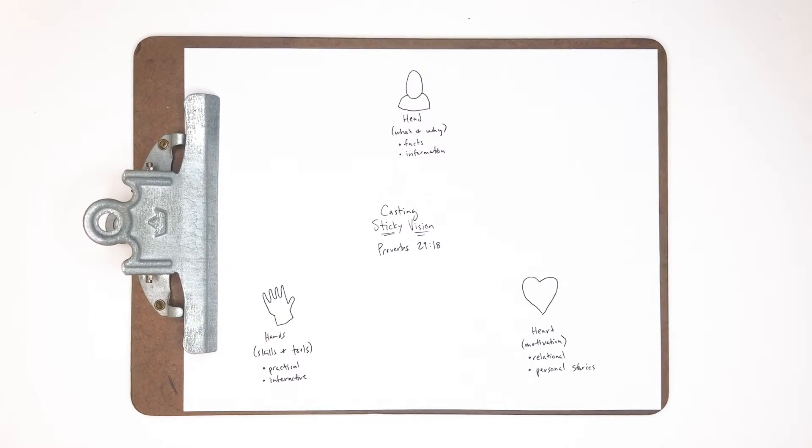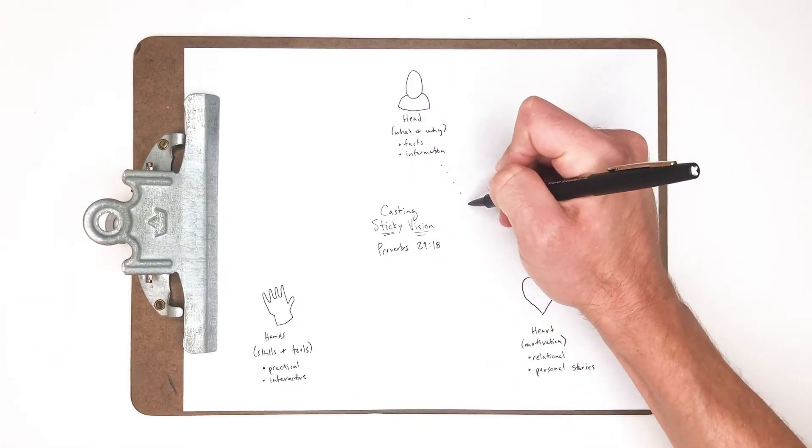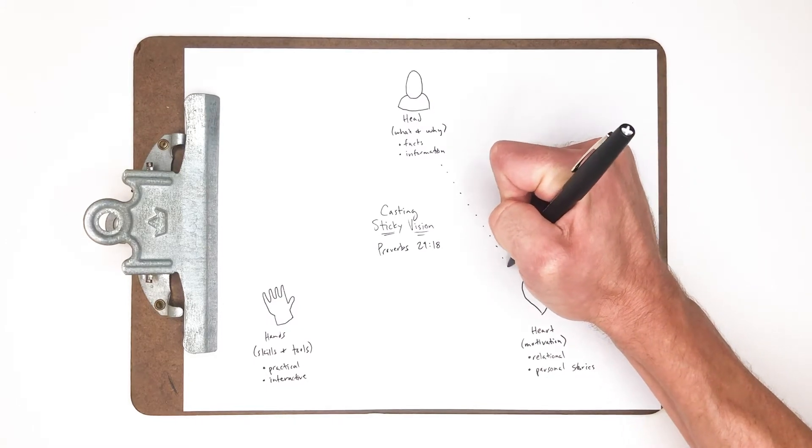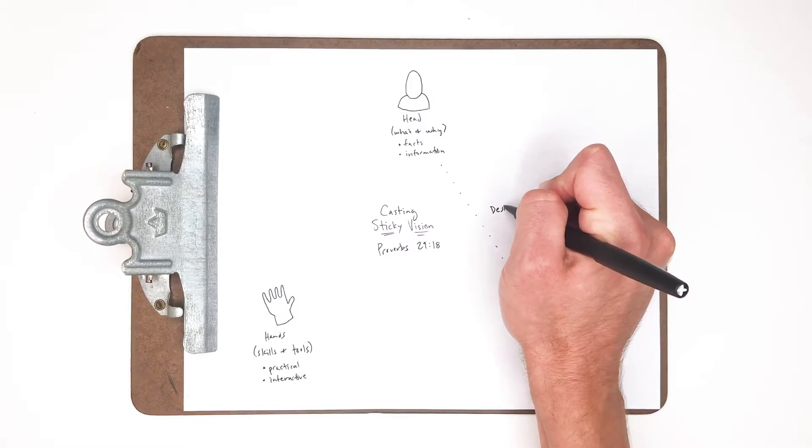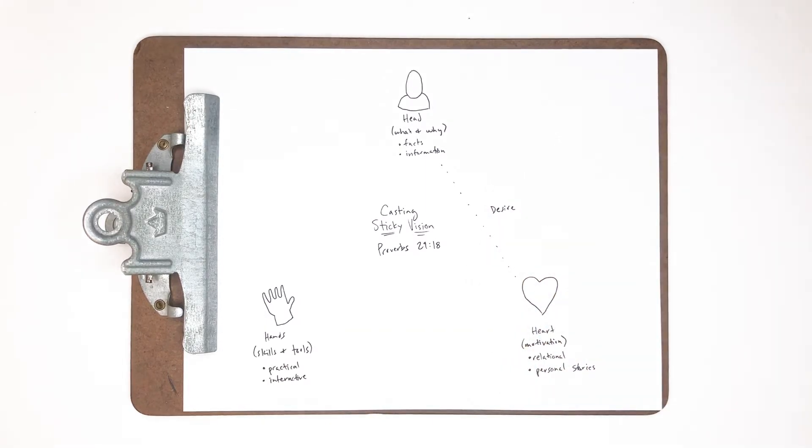We actually begin to find that as we connect with a vision from our head to our heart, we find a desire beginning to grow in us for the vision that our head might have caught. Or as our heart begins to grab a hold of it and connecting with the bigger picture of our head and the way that we think about it, our desire has a framework to engage with.